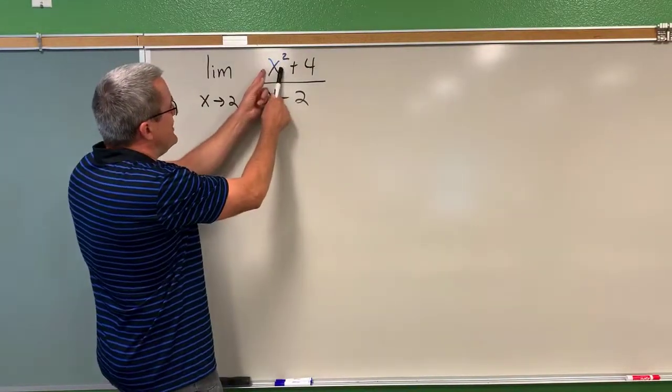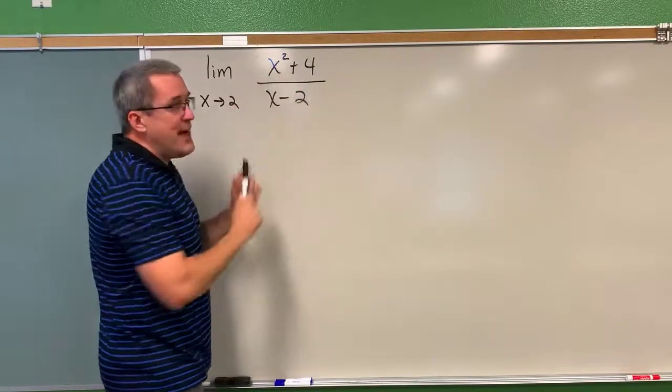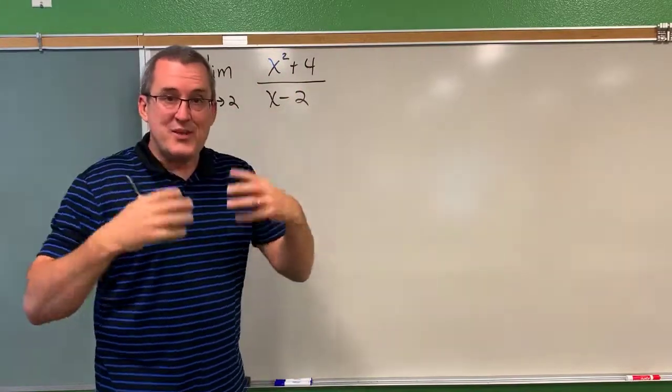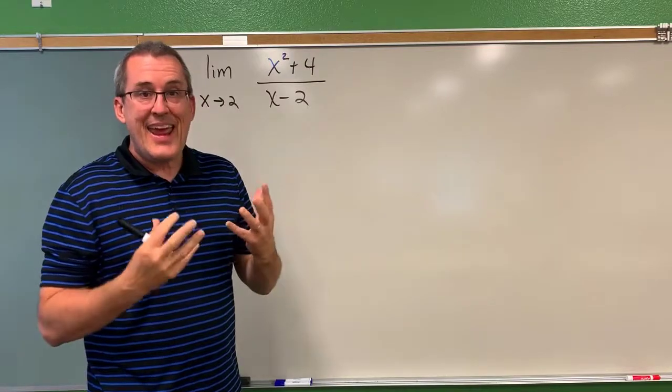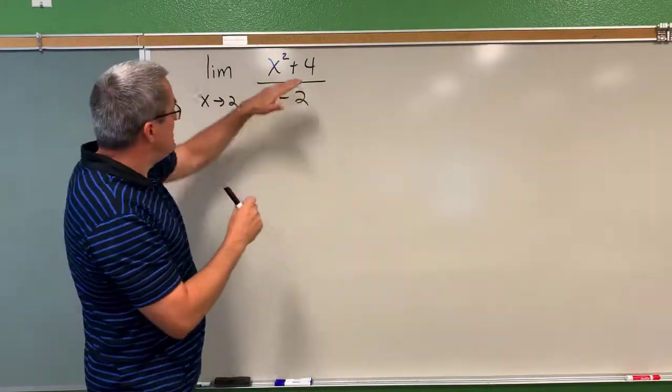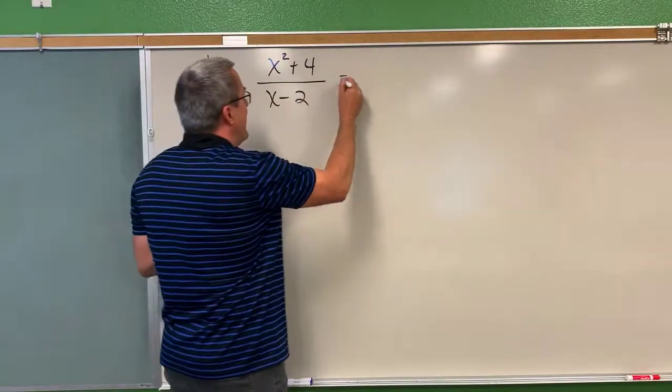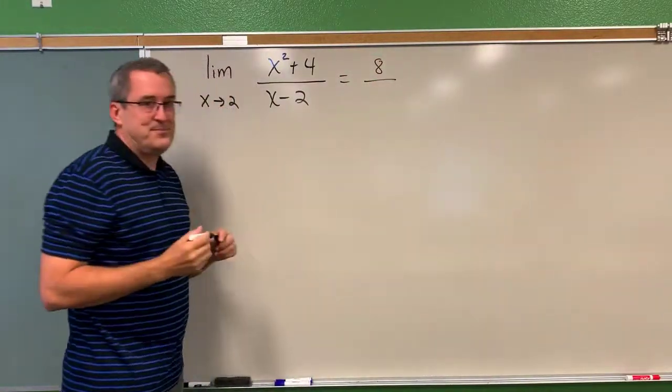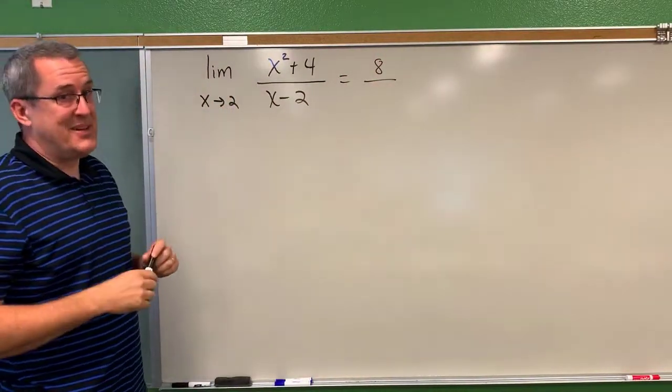And if you take a value that's really close to 4 and add 4 you're going to get a quantity that's really close to 8. So as x gets nearby to 2 the numerator is going to get nearby to 8. But the denominator is another story.